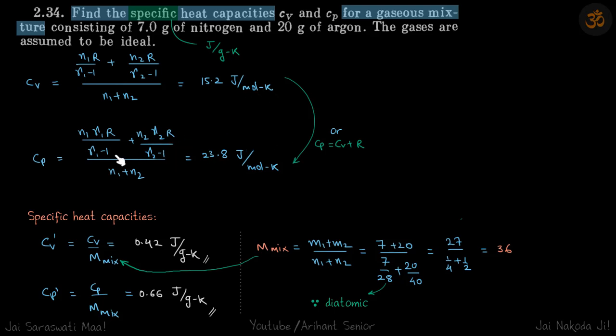And also you need not do this. If you have found Cv you can just add R to it, gas constant, and then you can directly also write Cp. I have just done it with both the methods.